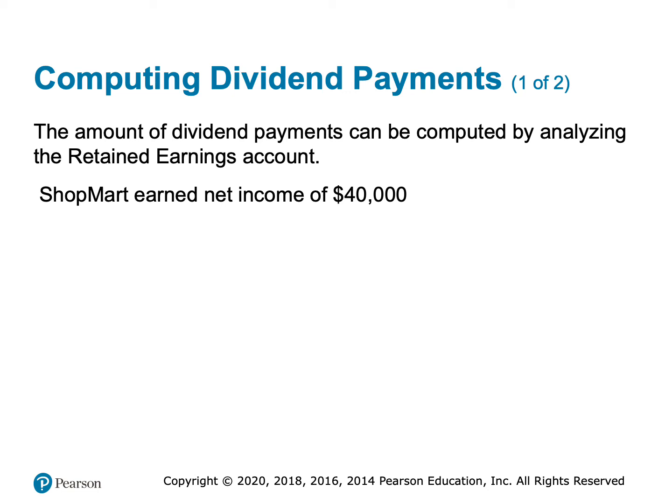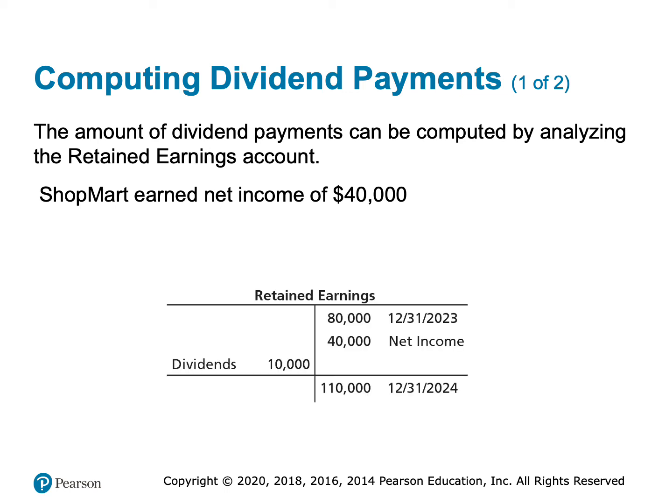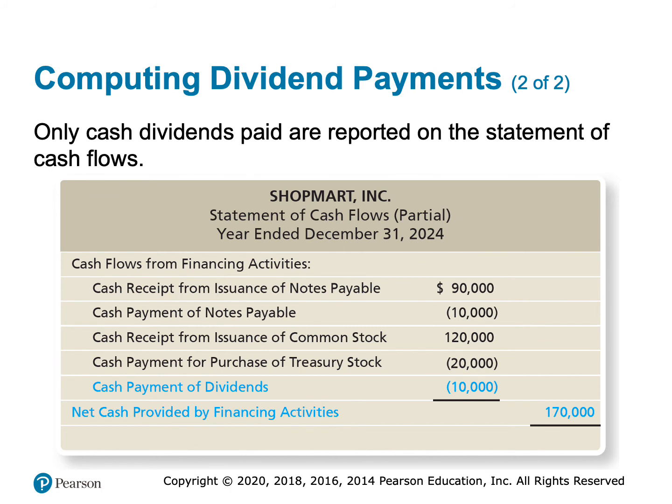We know we paid dividends, but we need to figure out how much. To do that, we look at the retained earnings account. Retained earnings were $80,000 last year, and only two things affect it: net income and dividends. Net income was $40,000, so without dividends the ending balance should be $120,000. But the ending balance is $110,000, which tells us we paid dividends of $10,000 — and that will be a negative number in the financing section.